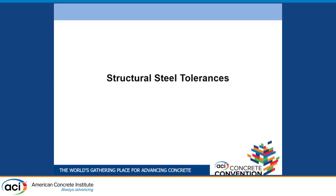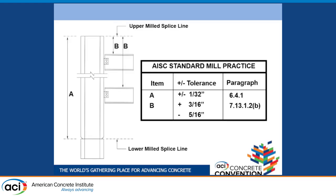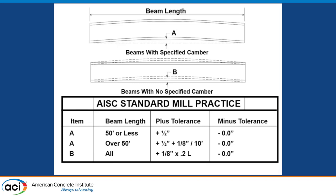Structural steel tolerances are a really important portion of the entire picture here, because the only elevation tolerance imposed on an erected steel frame is for base plates, and that's plus or minus an eighth of an inch. After you get above the base plate, everything is a fabrication tolerance. There's a tolerance on the length of the columns, a tolerance on the location of the beam-to-column connection, but that's measured from the upper splice point of the column. There's also a tolerance on the camber of beams.